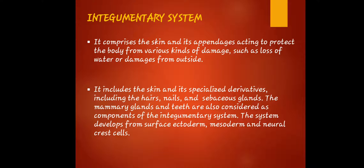The integumentary system comprises the skin and its appendages, acting to protect the body from various kinds of damage such as loss of water or damage from outside. It includes the skin and its specialized derivatives including the hair, nails, and sebaceous glands. The mammary glands and teeth are also considered components. The system develops from surface ectoderm, mesoderm, and neural crest cells. It is also called the largest organ of the body because it forms a physical barrier between the external and internal environment.